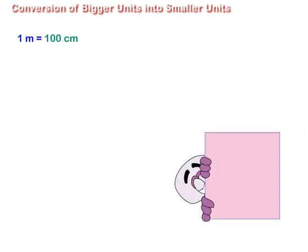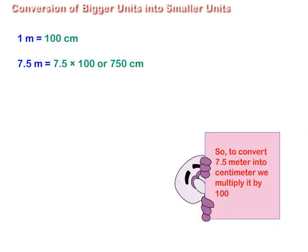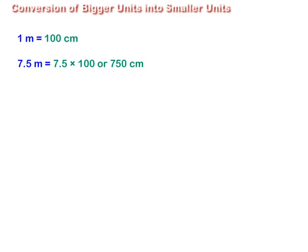1 m is equal to 100 cm. So, to convert 7.5 m into centimeters, we multiply it by 100 and get 750 cm.